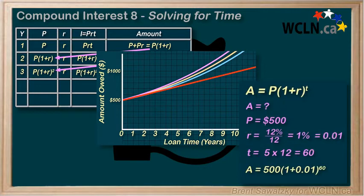We can solve for A, that is the amount owed at the end of a loan. We can rearrange the formula and solve for the principle P. And we can also rearrange, a bit more rearranging, to solve for the interest rate r.